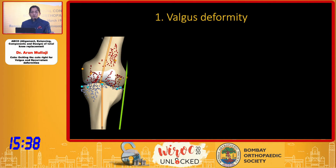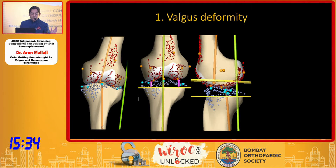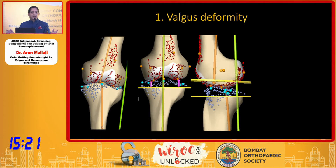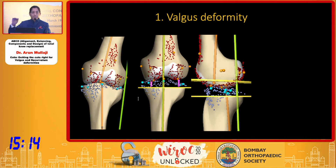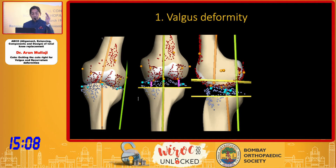Looking at substantial valgus deformities — what was portrayed as the magic of a robot has nothing to do with robots. It has to do with the software, which even in robotic surgery is the same software we've used for over 10 years in computer-assisted surgery. The robot only makes the cut for you, but the software is common.